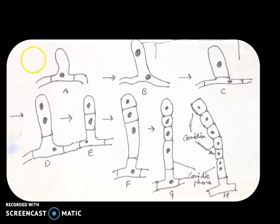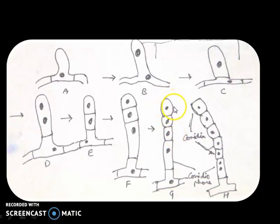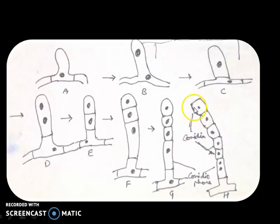The conidiophore actually divides — the nucleus inside divides mitotically and keeps adding cells from the bottom, which will later get converted into a conidium. At maturity, this conidium will get detached because it is attached with a gelatinous ring in between. This ring will dry up and the mature conidium will fall off, perhaps onto some other healthy host or healthy leaf.